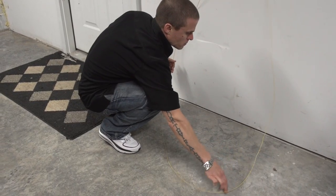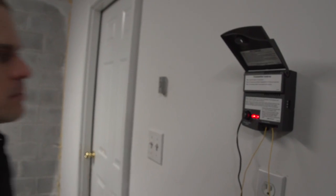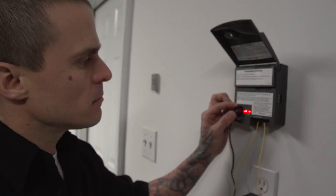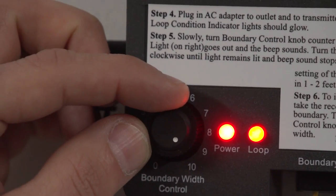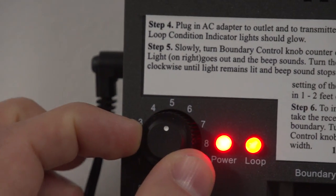Spread the wire to create separation between the wires. Note the original position of the boundary width control knob and turn the boundary width control knob to 10 and then back to 5.